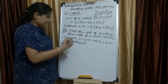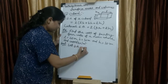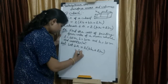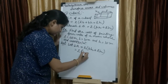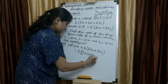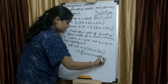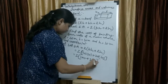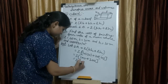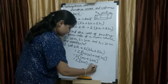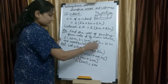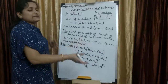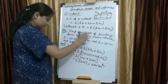Solution: lateral surface area = 2(bh + lh) = 2(10×10 + 20×10) = 2(100 + 200) = 2×300 = 600 meter square. Note that area units are always written as meter square, centimeter square, and so on.